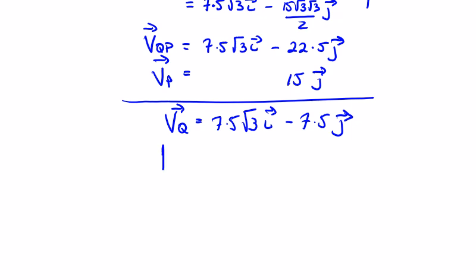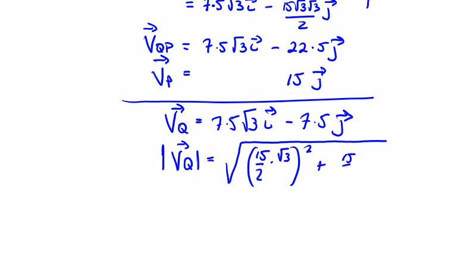So it's probably good to get the magnitude and the direction. The magnitude of the velocity of Q, we can work this out. If we use 7.5 is 15 over 2 times √3 squared, and then we're going to have plus, you can put the minus in if you want, for the 7.5 squared, but it's going to work out to be a positive 15 over 2 squared.